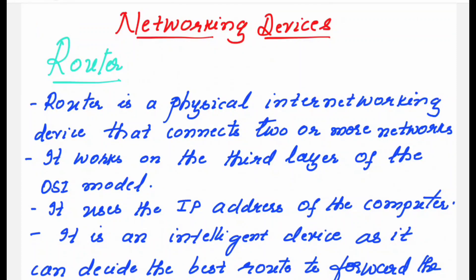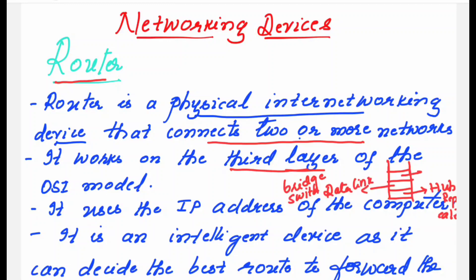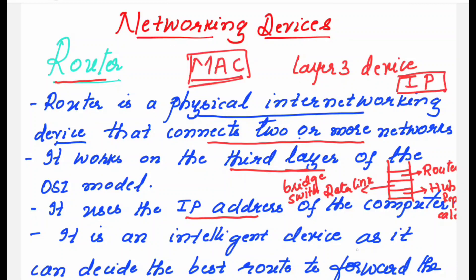Router is a physical internetworking device that connects two or more networks and it works on the third layer of the OSI model — the network layer. So we say it is a layer 3 device. It uses the IP address of the computer. It is an intelligent device as it can decide the best route to forward the packets from the source to the destination.